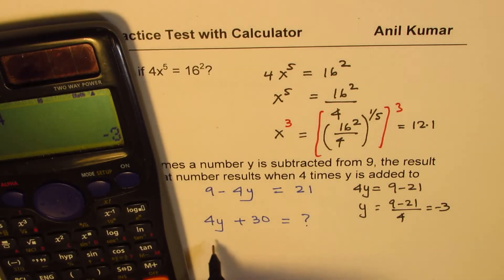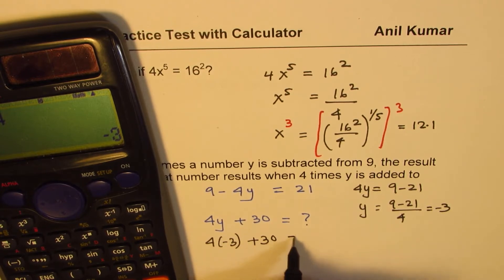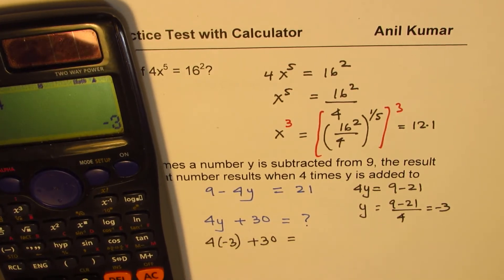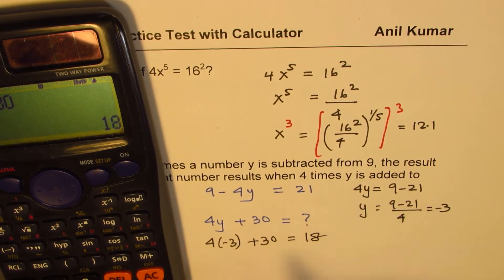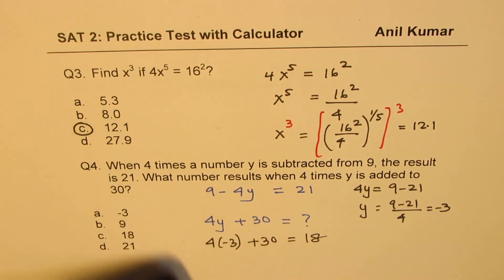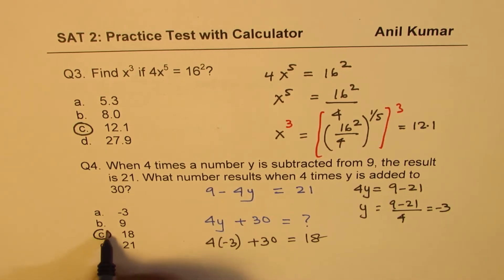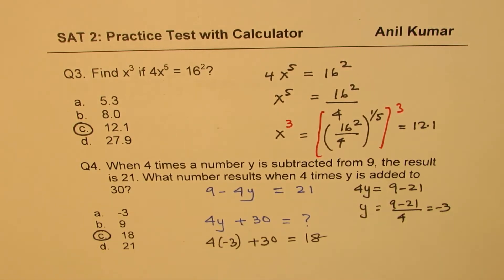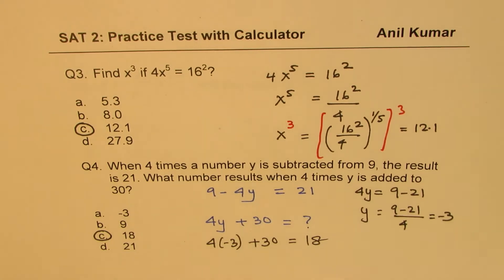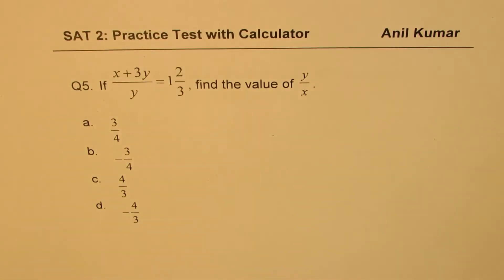Now substitute y equals negative 3: 4 times negative 3 plus 30. Multiply 4 by negative 3 to get negative 12, then add 30, giving 18. So the answer is 18. Even when using your calculator, you have to be efficient to save time.